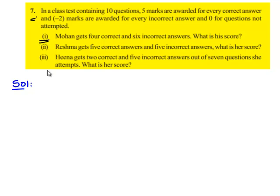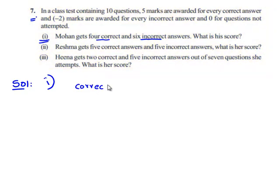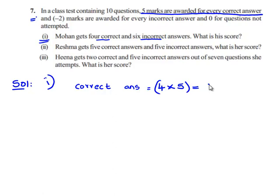The first part: Mohan gets 4 correct and 6 incorrect answers. What is his score? First, we'll find out the score he gets for the correct answers. The number of correct answers is 4, and 5 marks are awarded for every correct answer. Therefore, the total score obtained by Mohan for correct answers is 4 × 5, which equals 20.